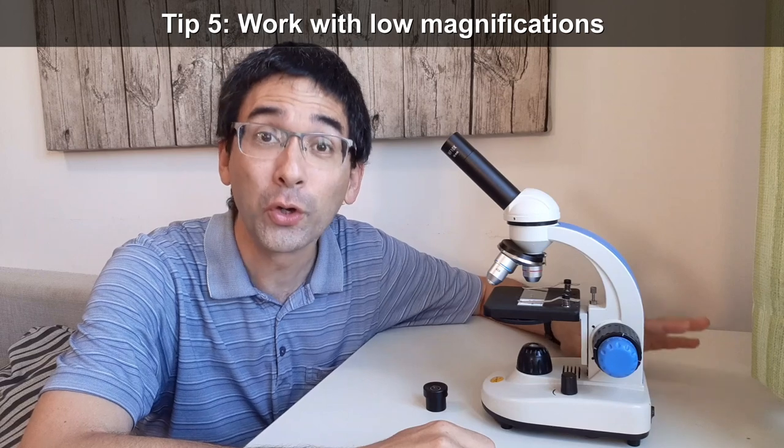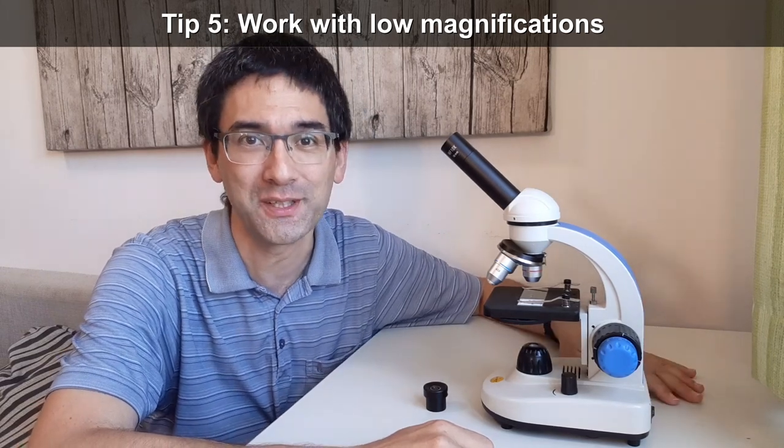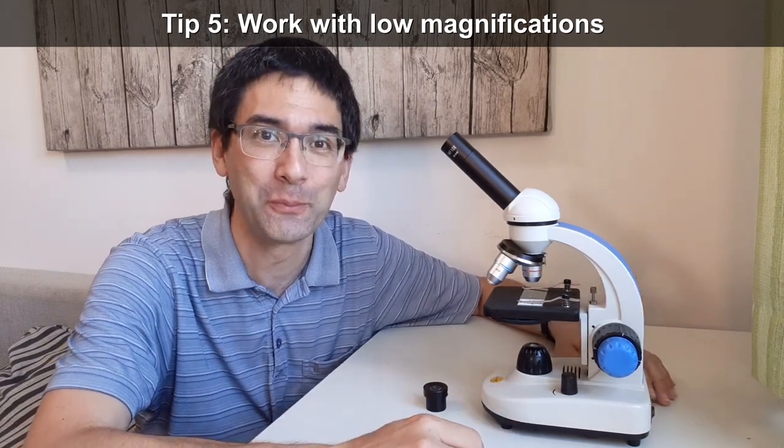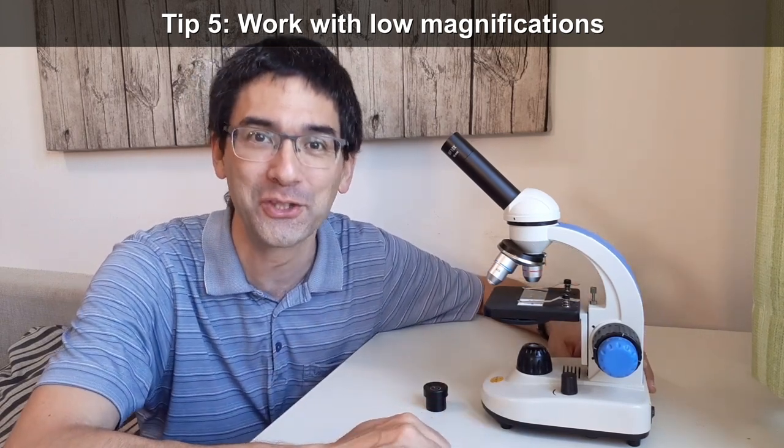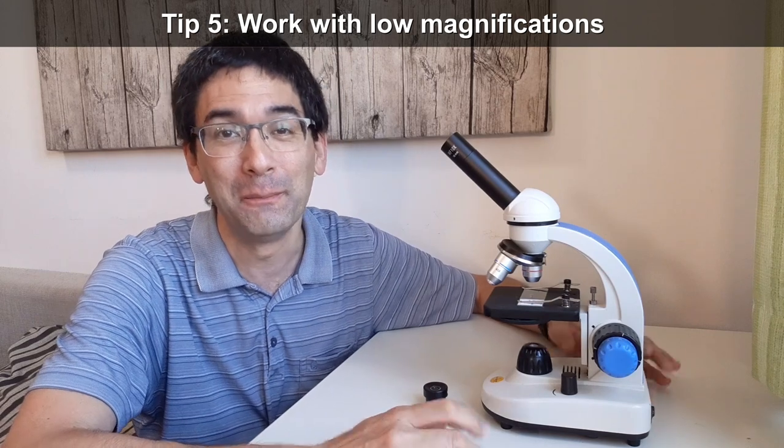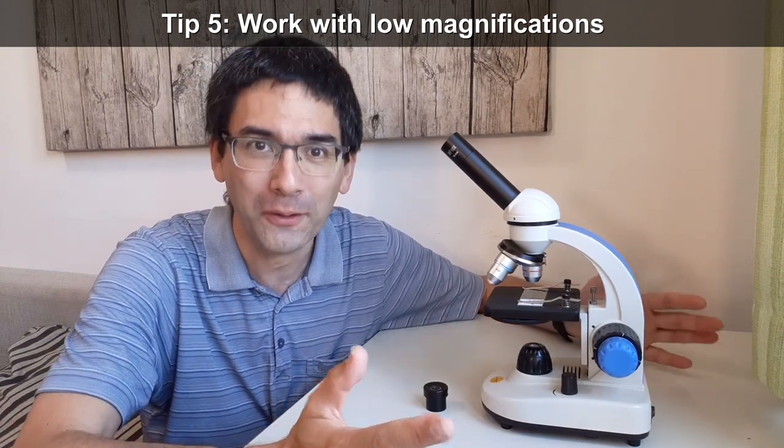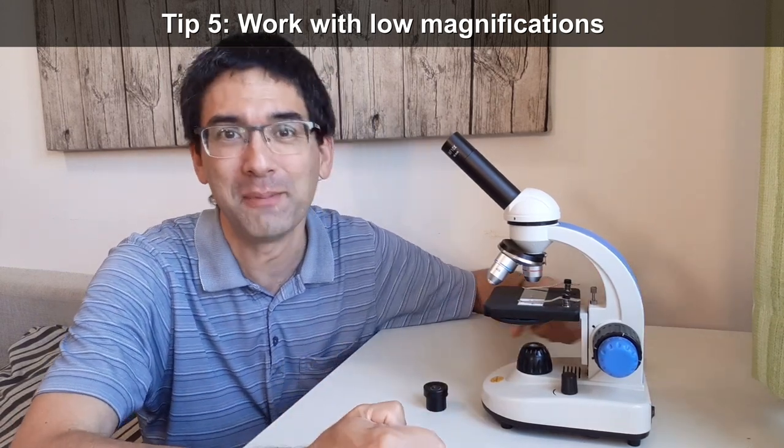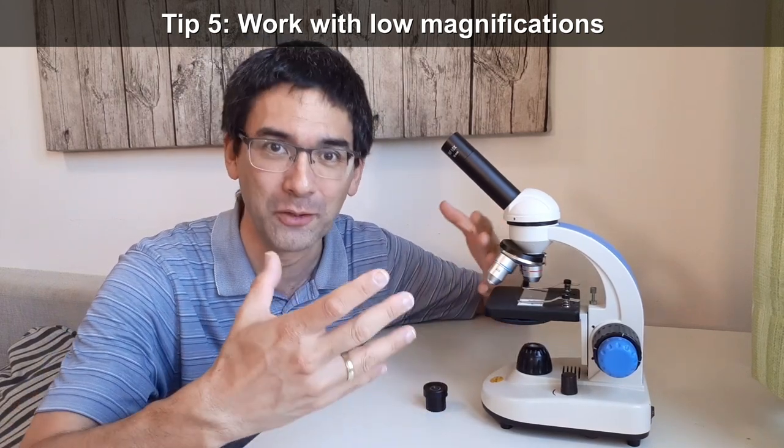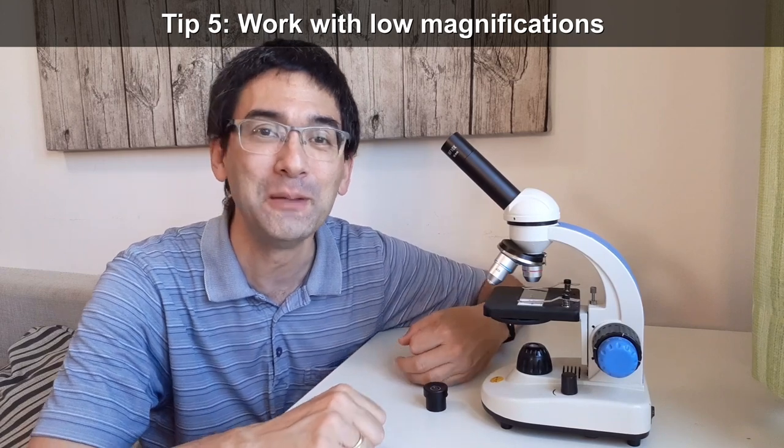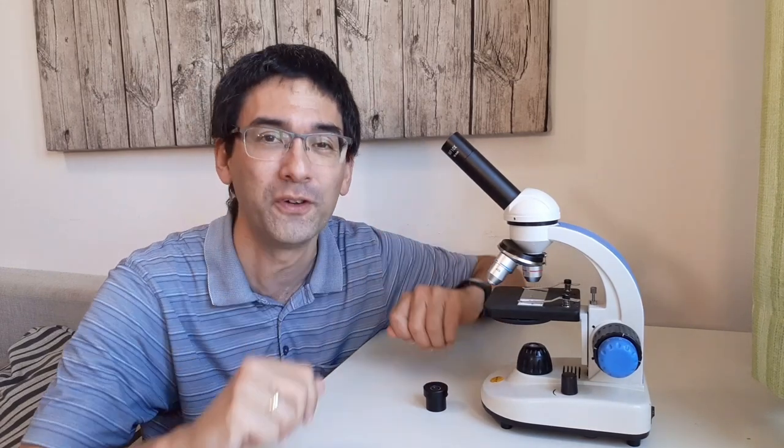Next tip is work with low magnifications. Many beginning microscopists, what they want to do is they want to switch immediately to the highest possible magnification because they think that they see more the more that you magnify. But as a matter of fact, the image becomes just darker and more blurry. Sure, it does become bigger what you see, but often you don't see many more details because everything's just more fuzzy and blurry.